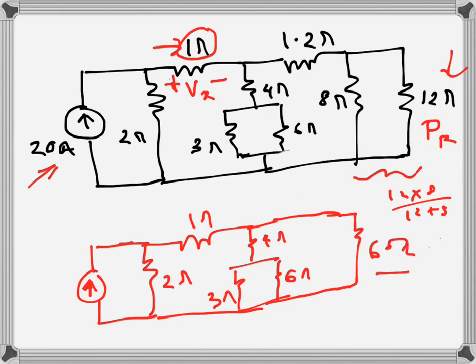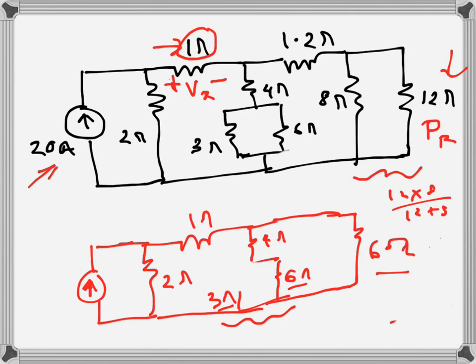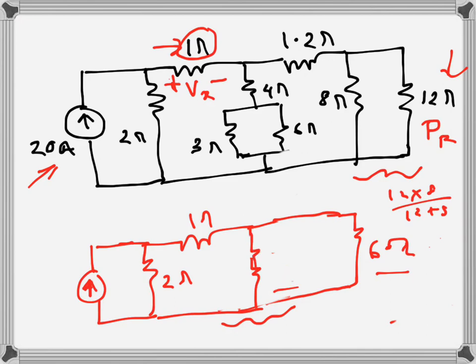This 6Ω is now in parallel with another part of the circuit. We have 3Ω and 6Ω in parallel, giving 3 times 6 over 3 plus 6, which is 18 over 9 — that's 2Ω. Now there is a 4Ω and this 2Ω in series, so we replace those two with a single 6Ω resistance.